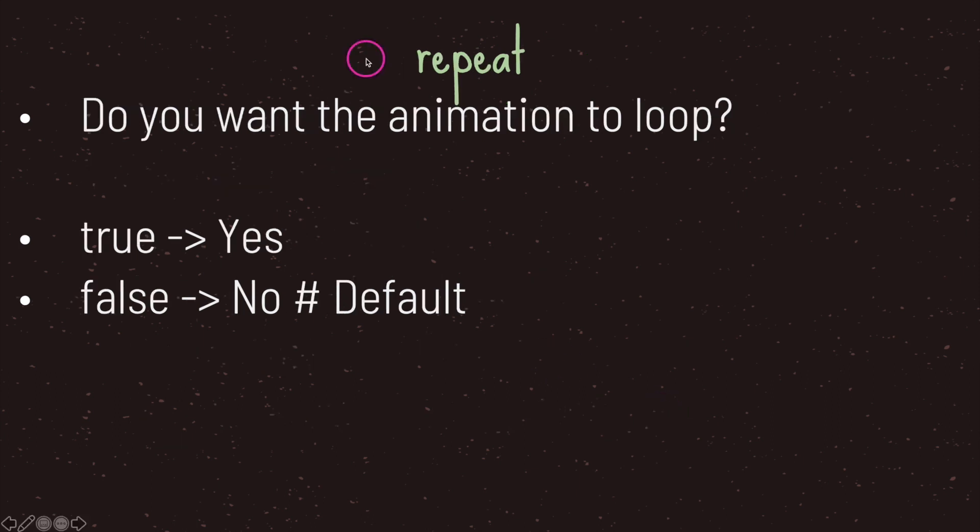The last property is repeat, which simply controls whether you want the animation to loop. If set to true it will loop; if set to false it won't.